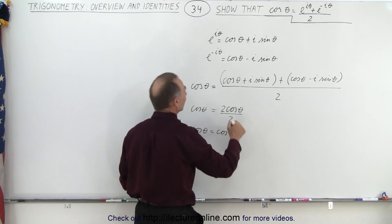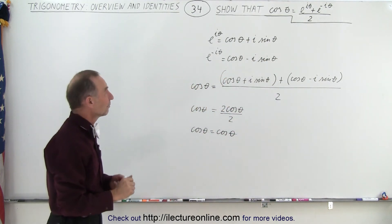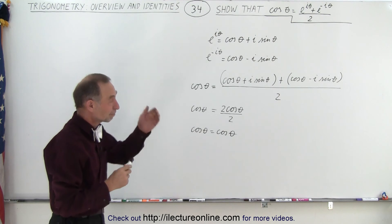And so we can say that the cosine of theta is indeed equal to the cosine of theta if we let the cosine of theta equal to e to the i theta plus e to the minus i theta divided by two. And that is how it's done.